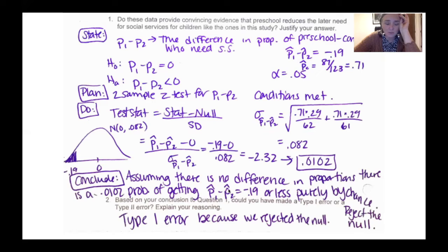So assuming there's no difference in proportions, there's a 0.0102 probability of getting this value purely by chance. So we reject the null. Based on that conclusion, which error could you make? And the answer is that you could make a type one error because we rejected the null. So that would be where the error would be is in our conclusion to reject the null.